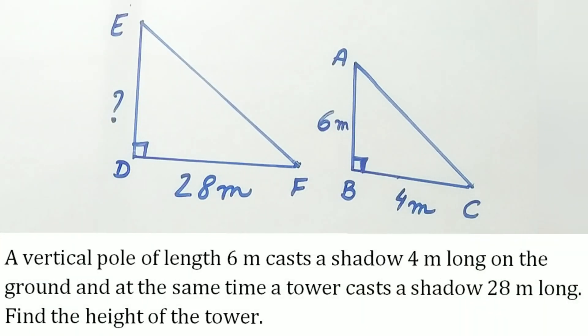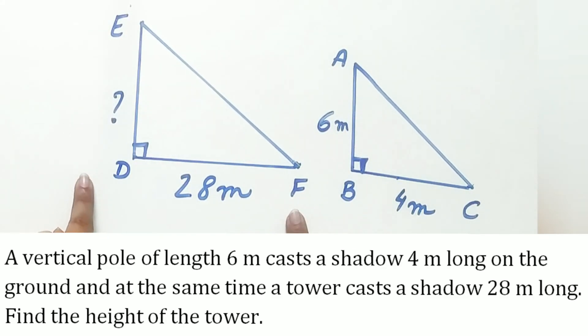A vertical pole of length 6 meter casts a shadow 4 meter long on the ground and at the same time a tower casts a shadow 28 meter long. Find the height of the tower.